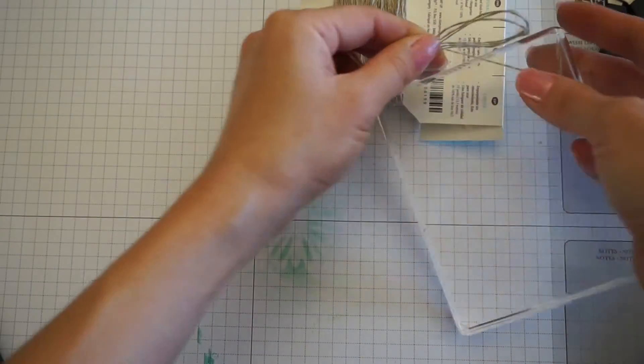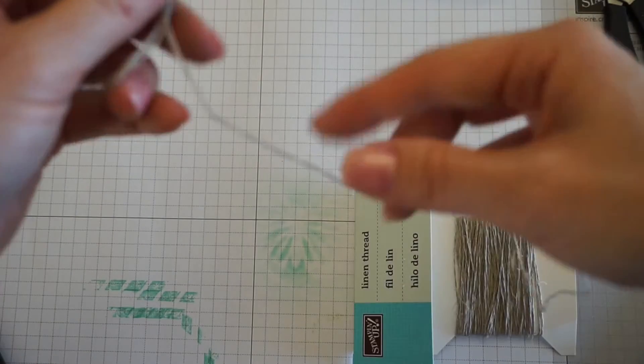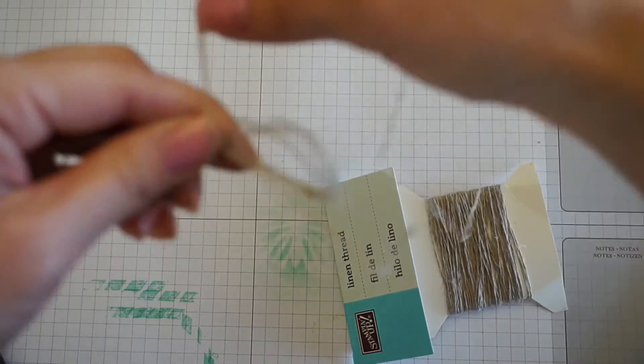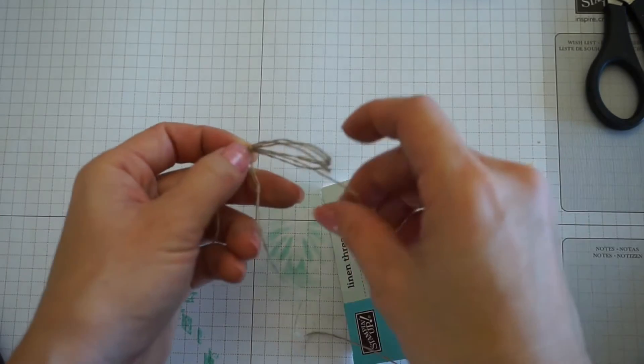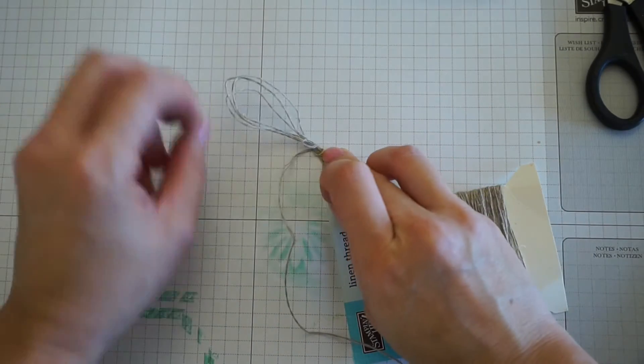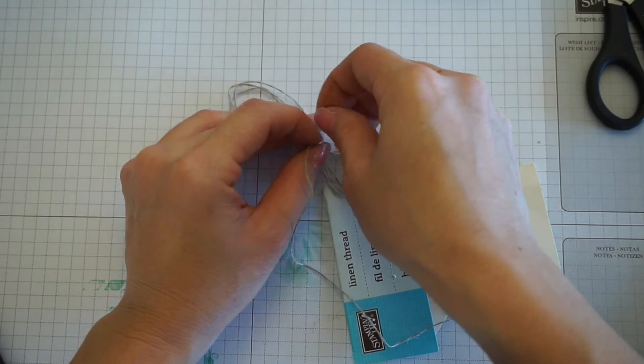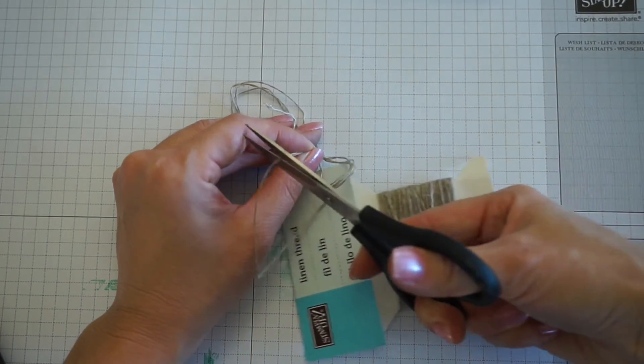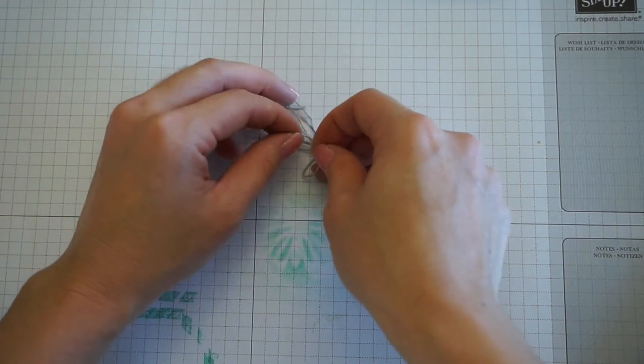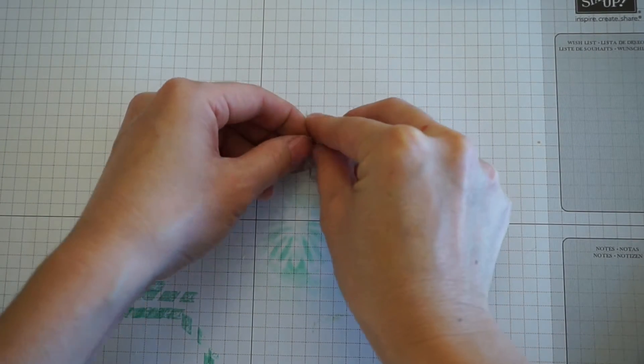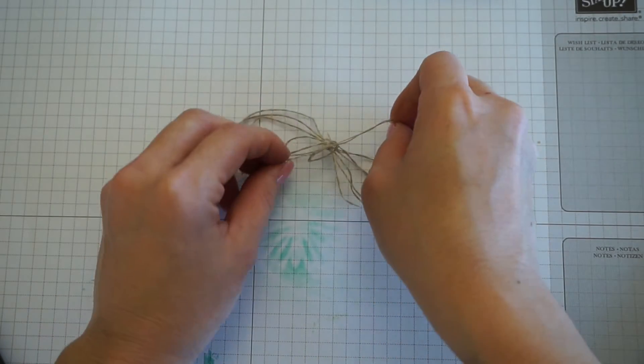Carefully take it off of your block and wrap it around the center. Wrap it around a couple of times and I just made a knot.